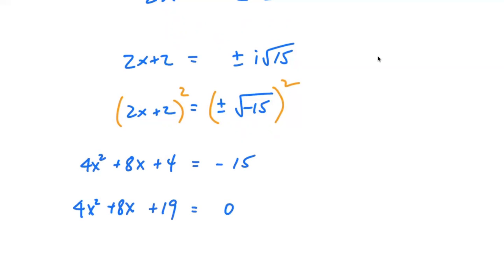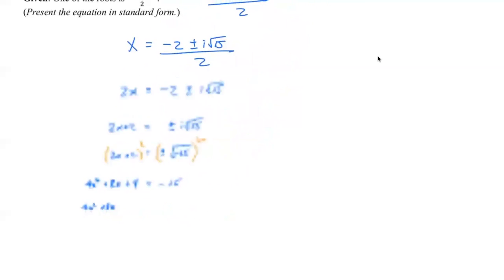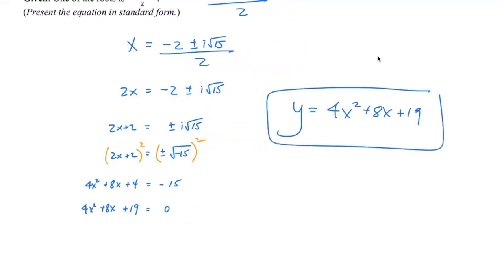Just like this, you actually have your equation. For this one, you do not have to walk the extra step to find out the a value, because it already has the a value. The a value would be 4, the b value would be 8, the c value would be 19.